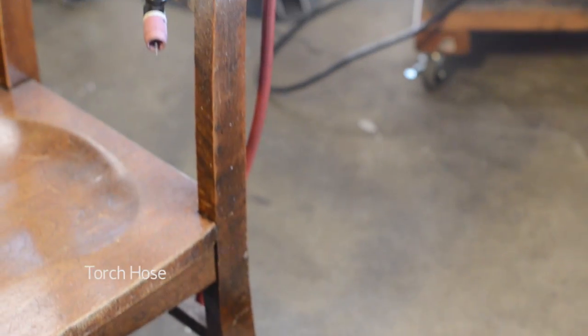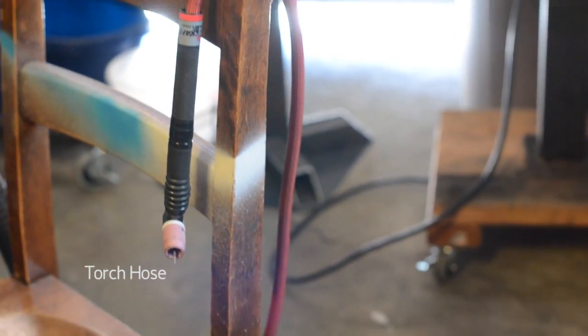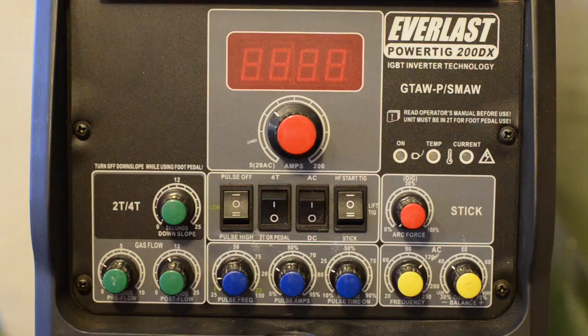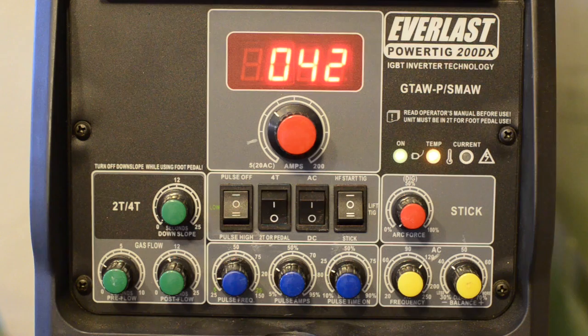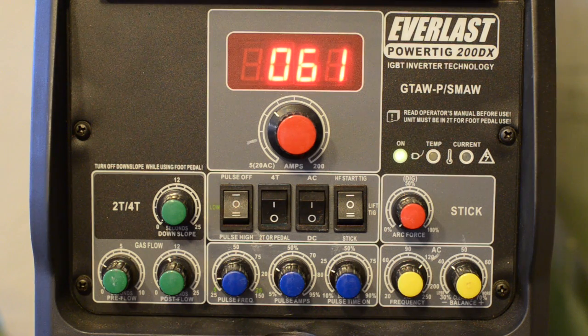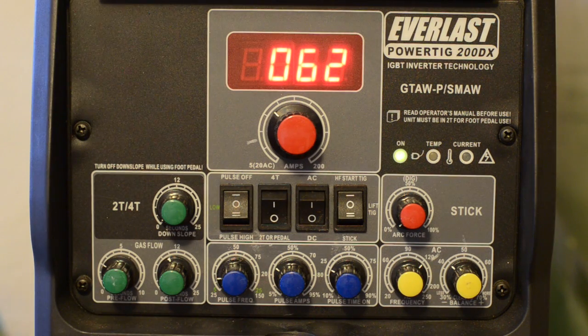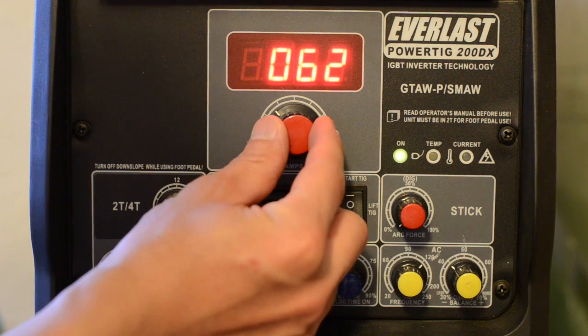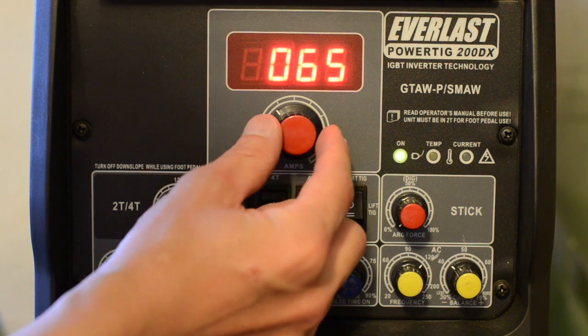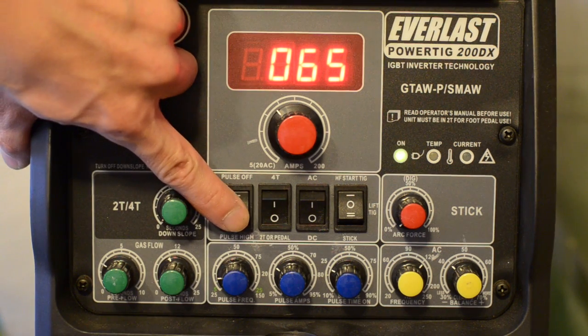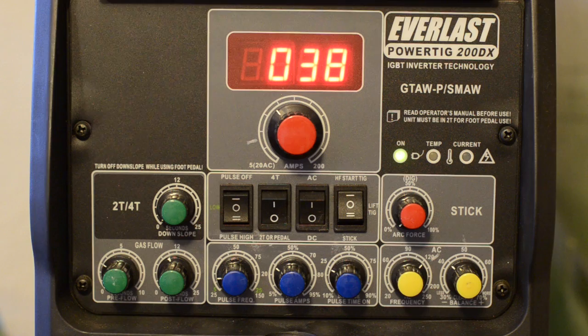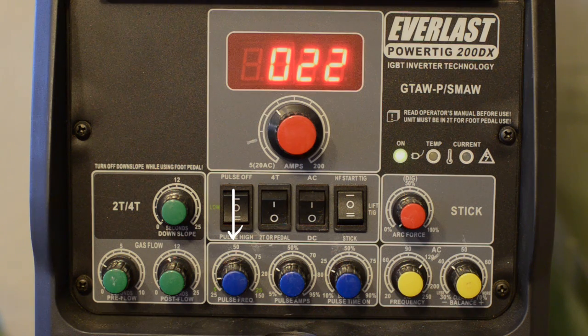This is the sleeve that covers the argon hose. I actually removed part of it near the end and found that to be a lot easier to hold the torch. The base setting I'm using is around 60 to 80 amps, but really just like regular welding, you're using the foot pedal to tweak your amperage. This little switch here turns the pulser on.